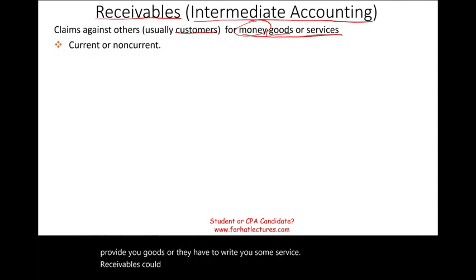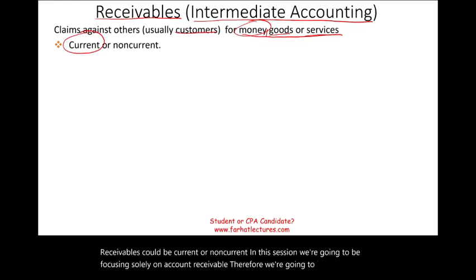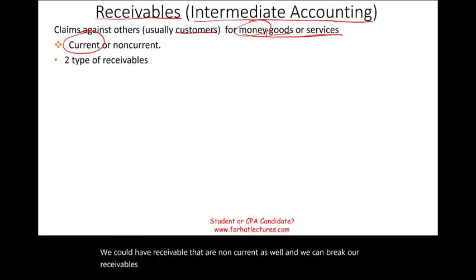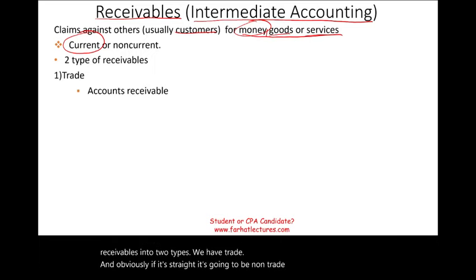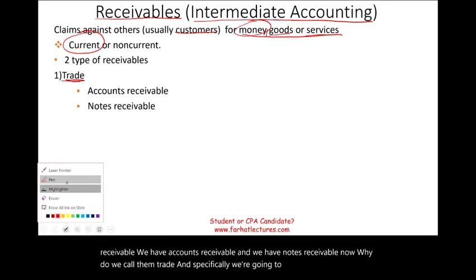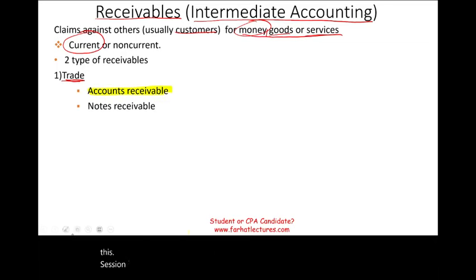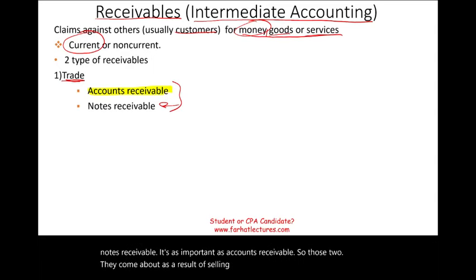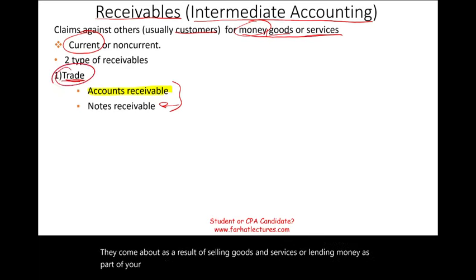Receivables could be current or non-current. In this session we're focusing solely on accounts receivable, so we're dealing with current receivables. We can break receivables into two types: trade and non-trade. Under trade receivable we have accounts receivable and notes receivable. They come about as a result of selling goods and services or lending money as part of your operation — therefore they are part of your trade.